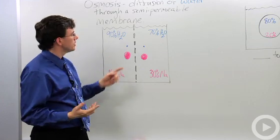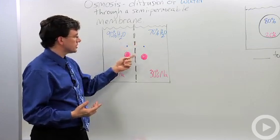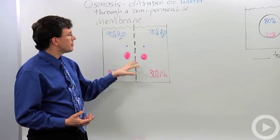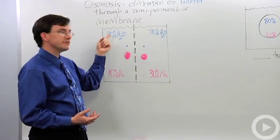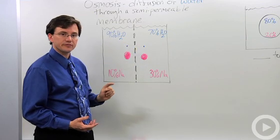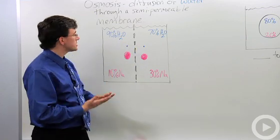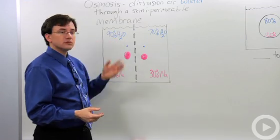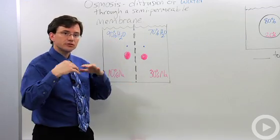You'll notice there are small holes in it. I've used red to represent sodium ions - they're too large to fit through these holes. I've used blue to represent water - it's easily small enough to fit through. What happens is that like all other molecules, water does diffusion.